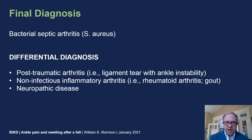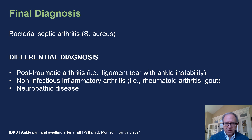The differential diagnosis could have included post-traumatic arthritis — for instance, ligament tear with ankle instability which can lead to aggressive-looking arthritis — non-infectious inflammatory arthritis such as rheumatoid arthritis or gout, or even neuropathic disease if there was a history of diabetes especially.